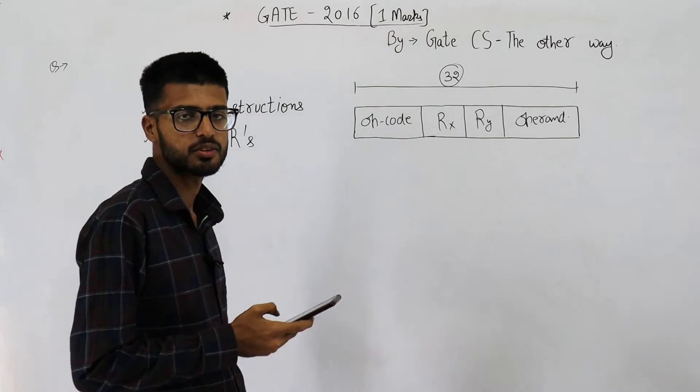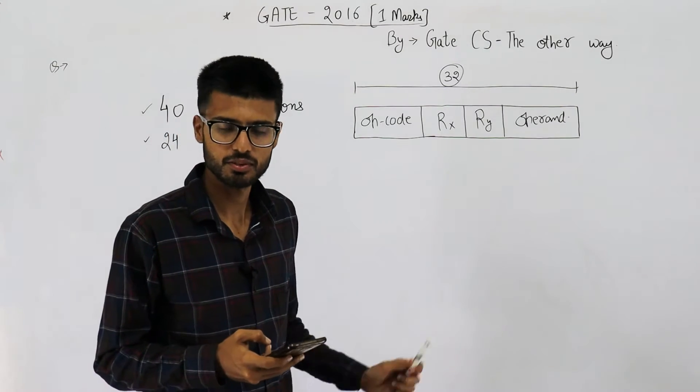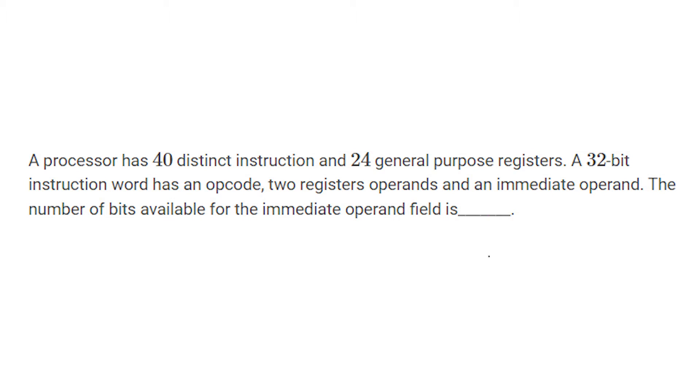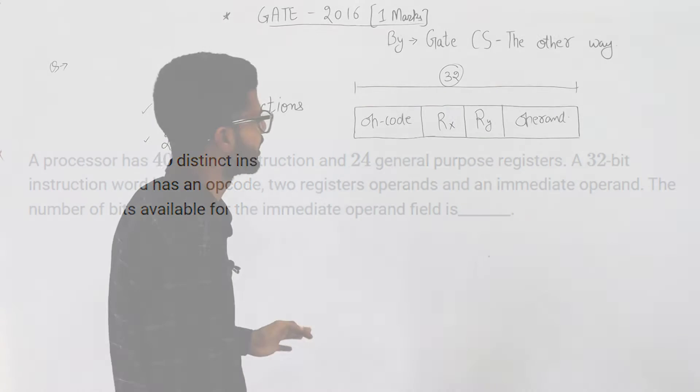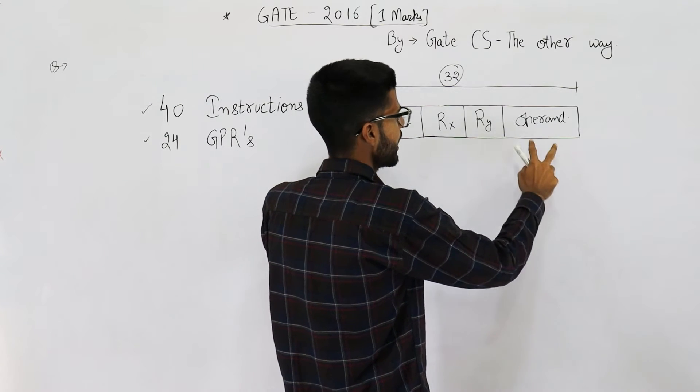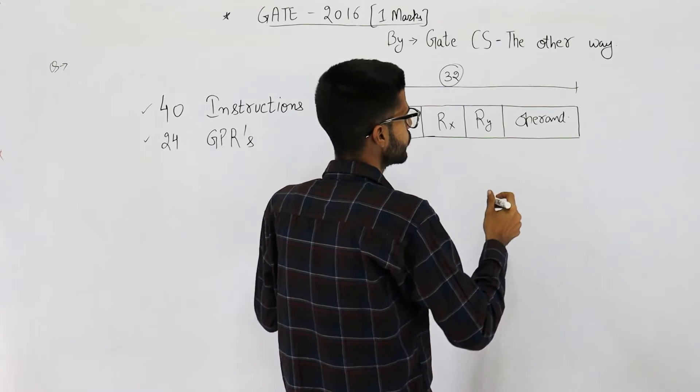Welcome back. This is a 2016 question, it's for one mark, and it's a very easy question. So the statement says a processor has 40 distinct instructions and 24 general purpose registers. A 32-bit instruction word has an opcode, two register operands, and an immediate operand. The number of bits available for the immediate operand field is what we need to find.